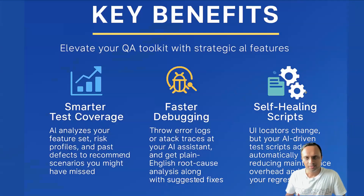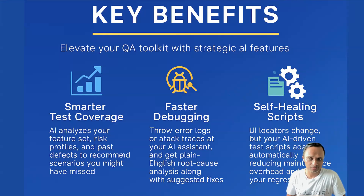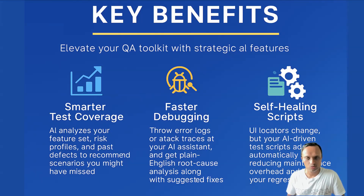Let's break down the three key benefits of bringing AI into your QA toolkit. The first benefit is smarter test coverage. AI can analyze your feature set, risk profiles, and look at past defects to recommend scenarios which might have been missed earlier. It's like having a QA strategist sitting beside you to not only increase your test coverage, but also make it smarter and uncover those defects or scenarios which were missed earlier.